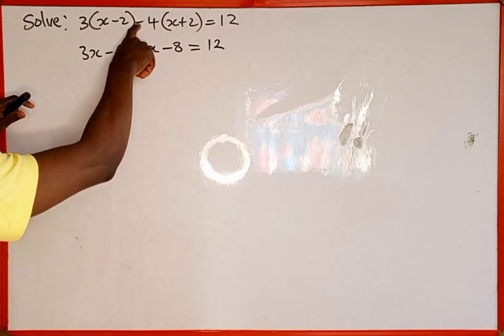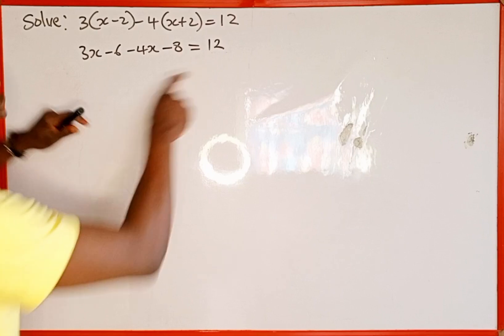Remember this negative is attached to this 4. We are using negative 4 to open the bracket.